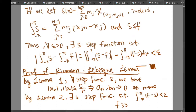And why can this absolute sign be removed? Because f minus s is greater than or equal to zero, and therefore the absolute sign here can be removed. And this is the end of the proof of Lemma 2.